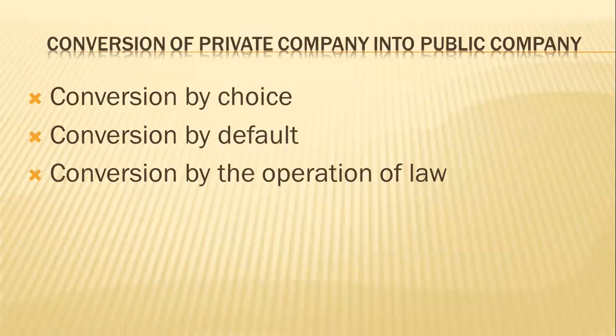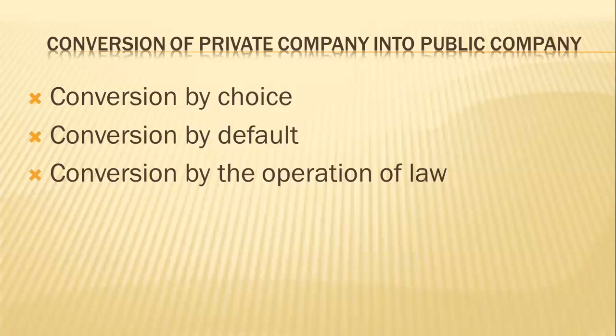Next, we discuss the conversion of a private company into a public company. There are basically three types of conversions. Point one — conversion by choice: a private company may deliberately choose to become a public company. If a private company deletes from its articles the requirements of Section 3(1)(iii) by passing a special resolution, the company will cease to be a private company from the date of alteration of the articles. It will then have to comply with all provisions of the Companies Act applicable to a public company, and within 30 days it shall file with the Registrar a prospectus or a statement in lieu of prospectus.